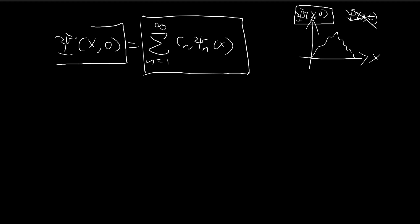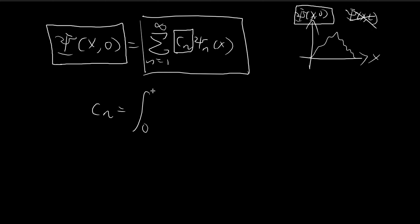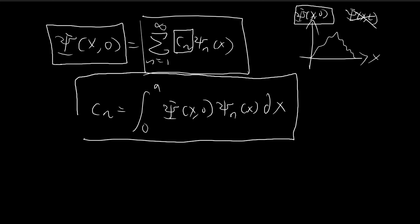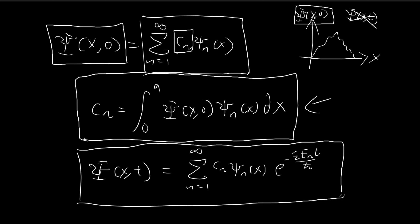We can narrow down cn by setting the initial wave function. Substituting t equal to zero, the exponential term becomes one, so on the right-hand side we get the sum of cn·ξn(x) — which looks exactly like the completeness statement from before. This means that if we set an initial wave function, we can always find cn by taking the integral from 0 to a of the initial wave function multiplied by ξn(x) dx, and then plug it back into the general formula for the wave function.